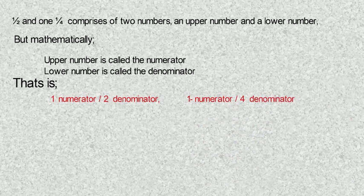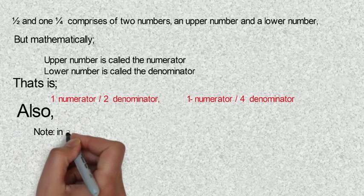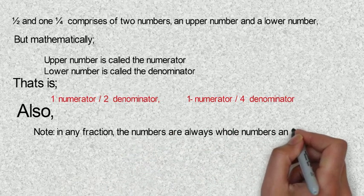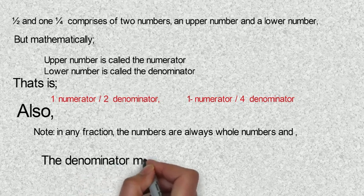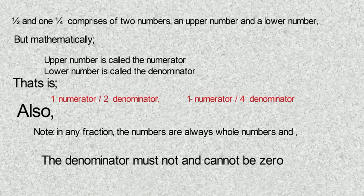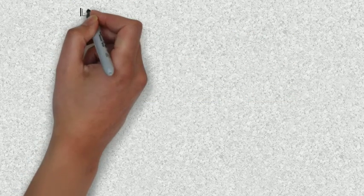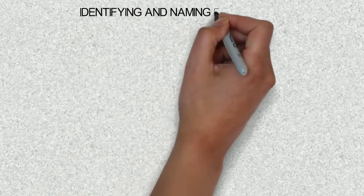Also note this: in any fraction, the numbers are always whole numbers and the denominator must not and cannot be zero. I hope you understand all I have said and shown you. If not, stop the video here and start all over again. If you do, then let's continue.